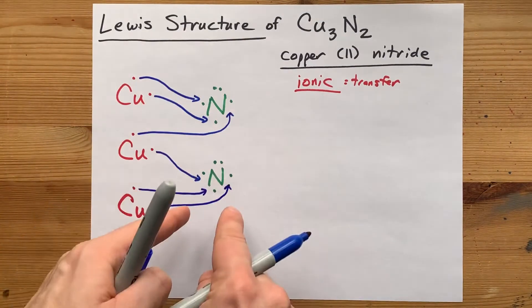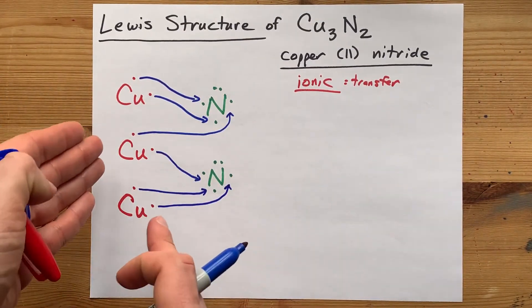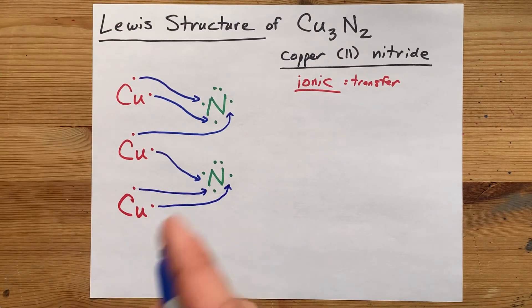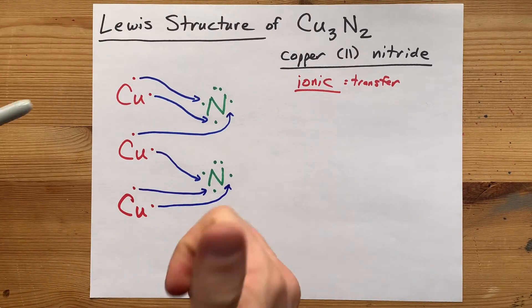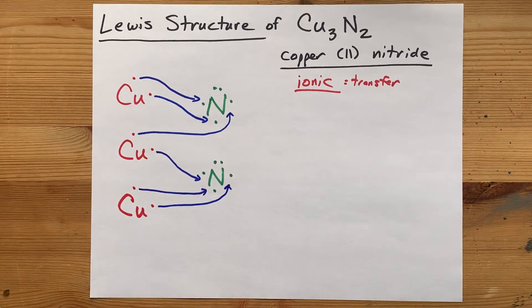Now, all the non-metals have a full outer shell of eight electrons. And all the metals gave away all their electrons. That's stability. Let's draw the completed Lewis structure.